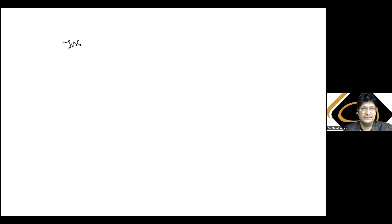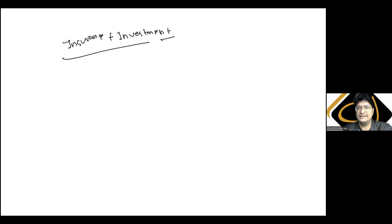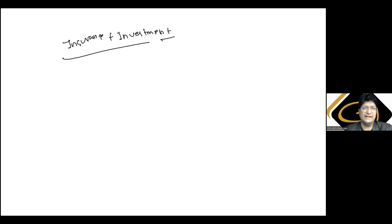Aapko samjhata hun — ULIP jo plan lete hain, usmein ek insurance component hota hai, ek investment component hota hai. Kuch jo aap premium pay karte hain, kuch insurance cover ke liye jaata hai, kuch market mein investment ke liye lagaya jaata hai. Ek cheez aur — jo humne 10% ki baat ki, agar koi specified disability defined hai aur uske liye insurance karaaya jaata hai, to HR 2012 waale mein yeh 15% kiya gaya hai.